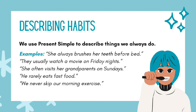Describing habits: We use present simple to describe things we always do. Example: She always brushes her teeth before bed. They usually watch a movie on Friday night. She often visits her grandparents on Sundays. He rarely eats fast food.